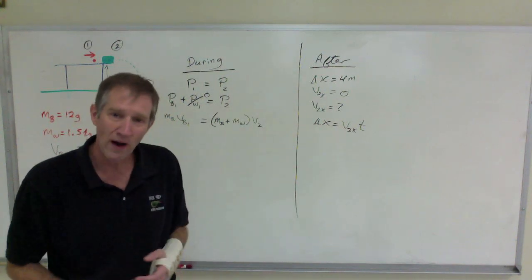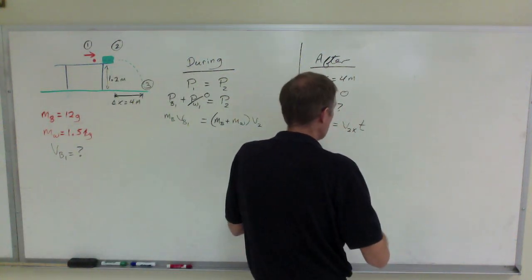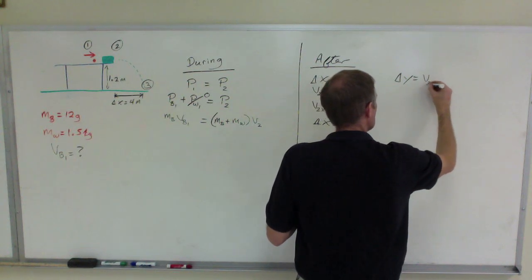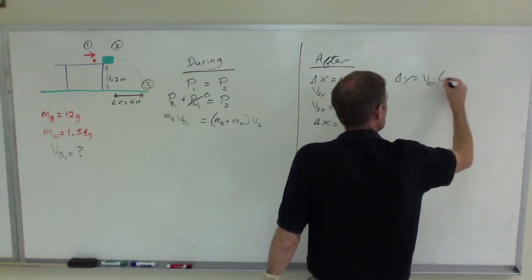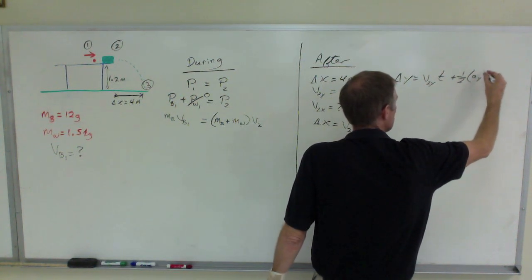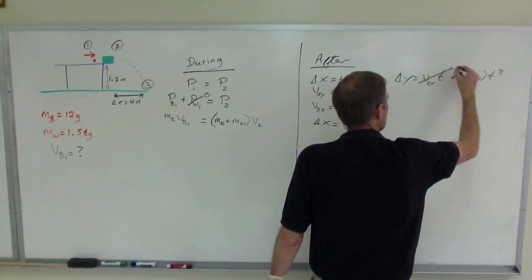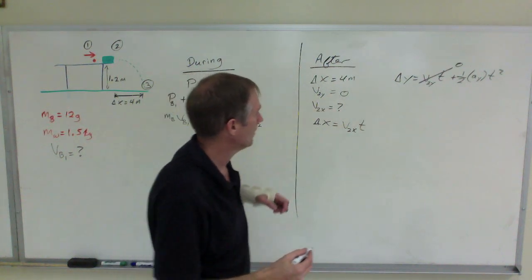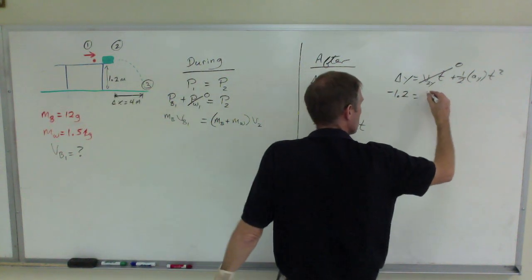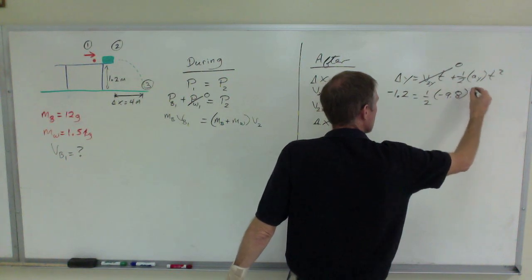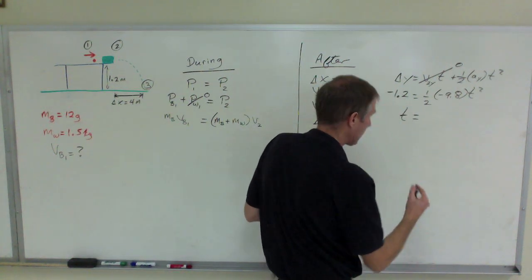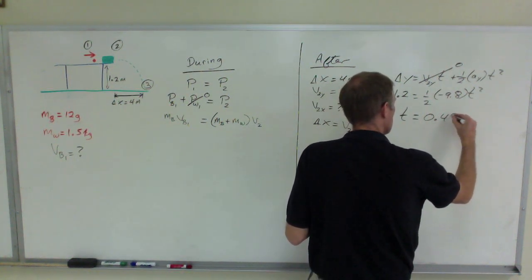We know delta x is 4. We find time using the y-axis: delta y equals v2y times t plus one-half times the vertical acceleration times t squared. V2y is 0 because it goes off horizontally, so we get: negative 1.2 equals one-half times negative 9.8 times t squared. Solving for t squared and taking the square root gives t equals 0.495 seconds.